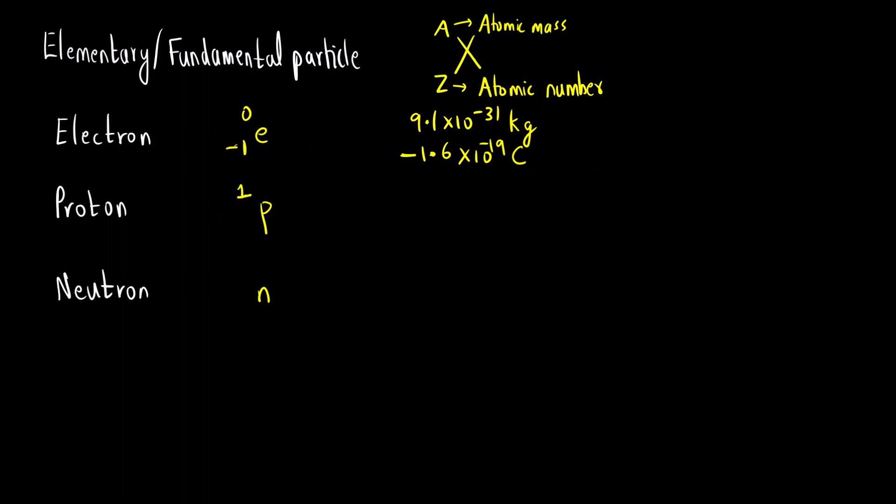Proton, what is the mass? We consider it to be 1, that is unity. And what is the charge? Plus 1. So you can see, the charge of electron is minus. That is why we call electron a negatively charged particle. And proton, charge is positive. That is why we call it a positively charged particle.